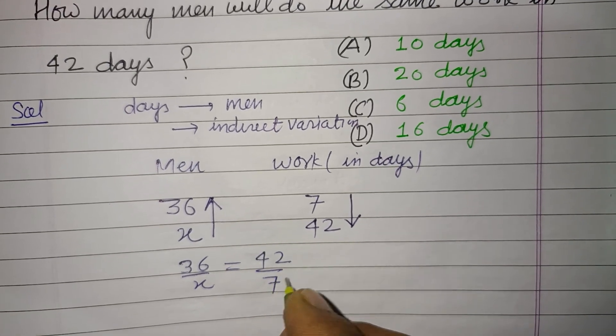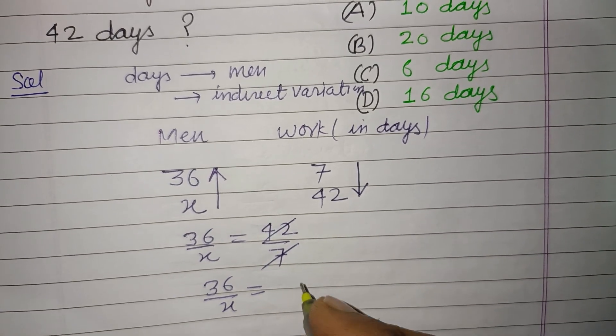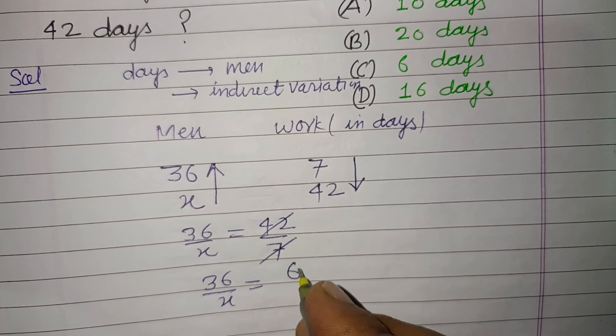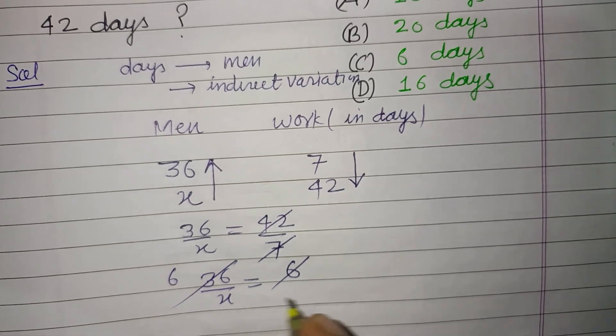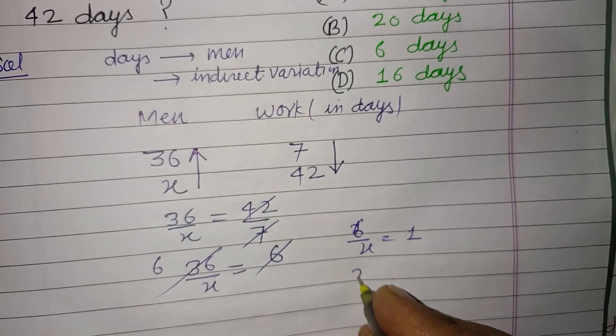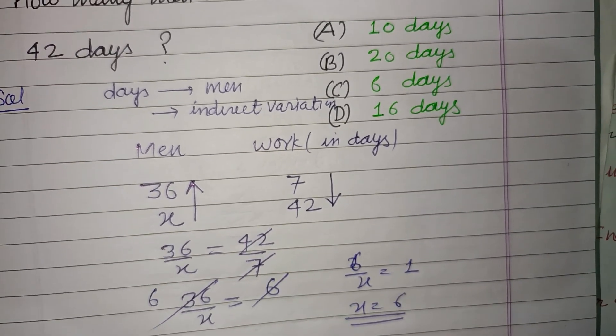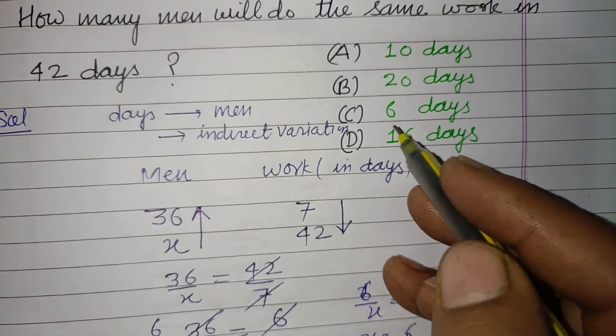7 into 6 is 42. 36 over X equals 6. 6 into 36 equals X. Therefore, 6 upon X equals 1, so X equals 6. Six men can do the work in 42 days.